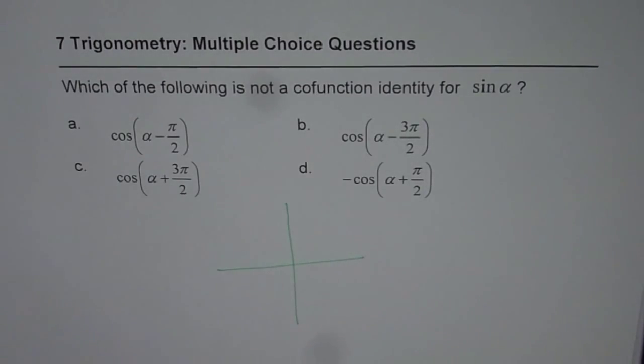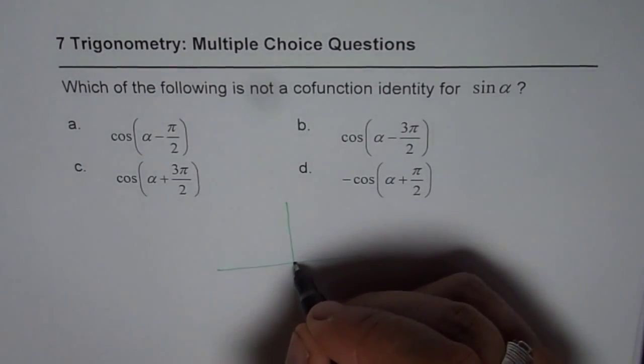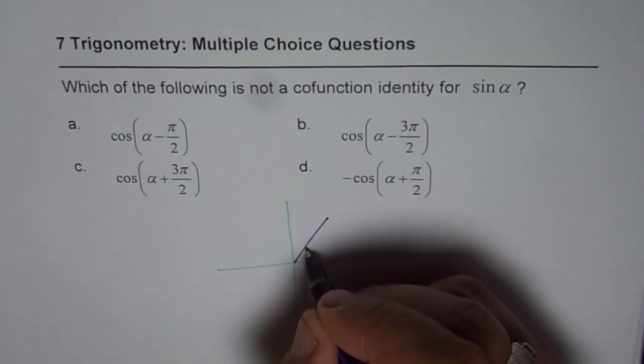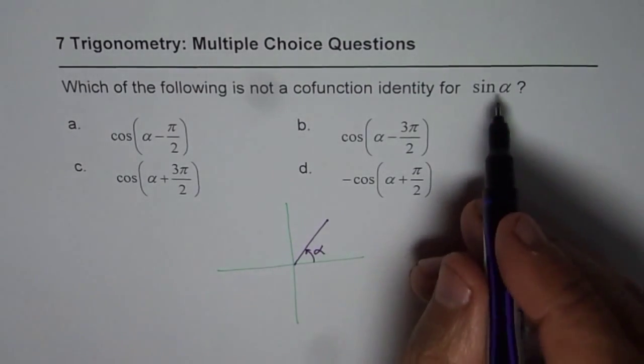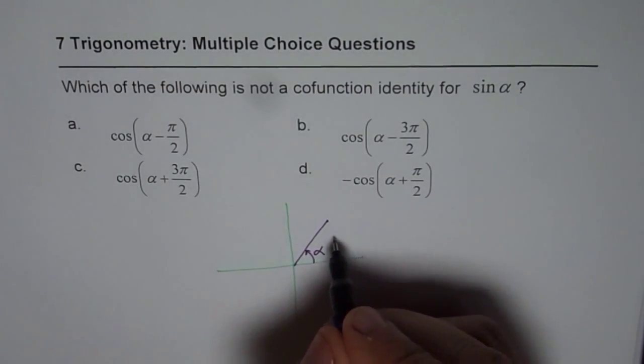Sine of alpha means we are talking about an acute angle, somewhere here, and let us say this angle is alpha for us. So, sine of alpha for us is positive.